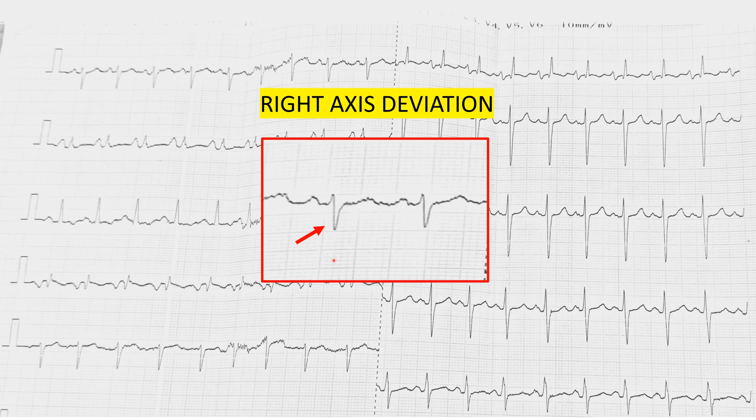There is also right axis deviation. In Lead I, the complex is more negative, indicating right axis deviation. Whenever there is pressure overload or volume overload affecting the right ventricle, there is a change in the vectors, and right axis deviation is typically seen in such cases.